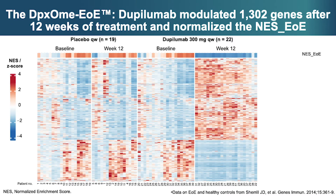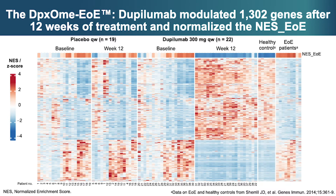This slide reveals the transcriptome data, which is quite remarkable. Each patient is shown along the x-axis, and the various genes known to be important in eosinophilic esophagitis are along the y-axis. On the right, you can see healthy controls as well as historical EoE patients. By week 12, the dupilumab patients have had a reversal of the eosinophilic esophagitis molecular signature, and from a molecular standpoint they essentially mirror those patients noted to be healthy controls.